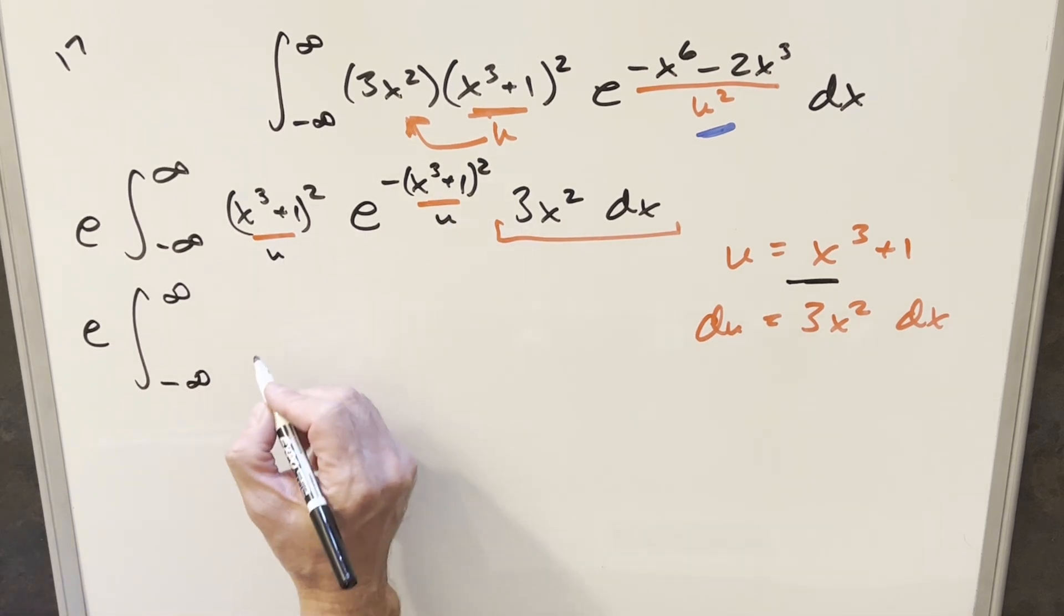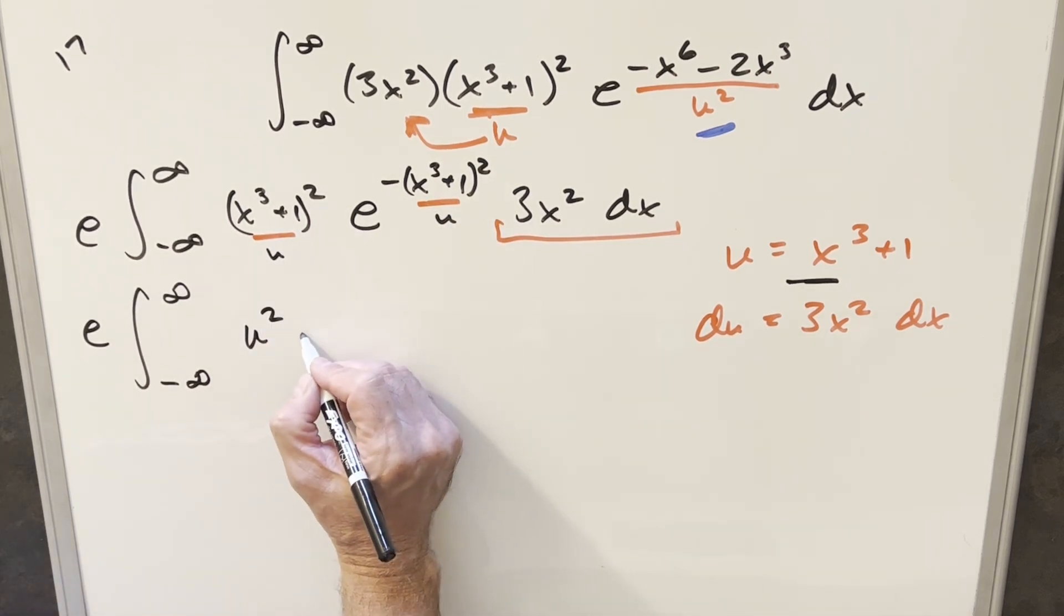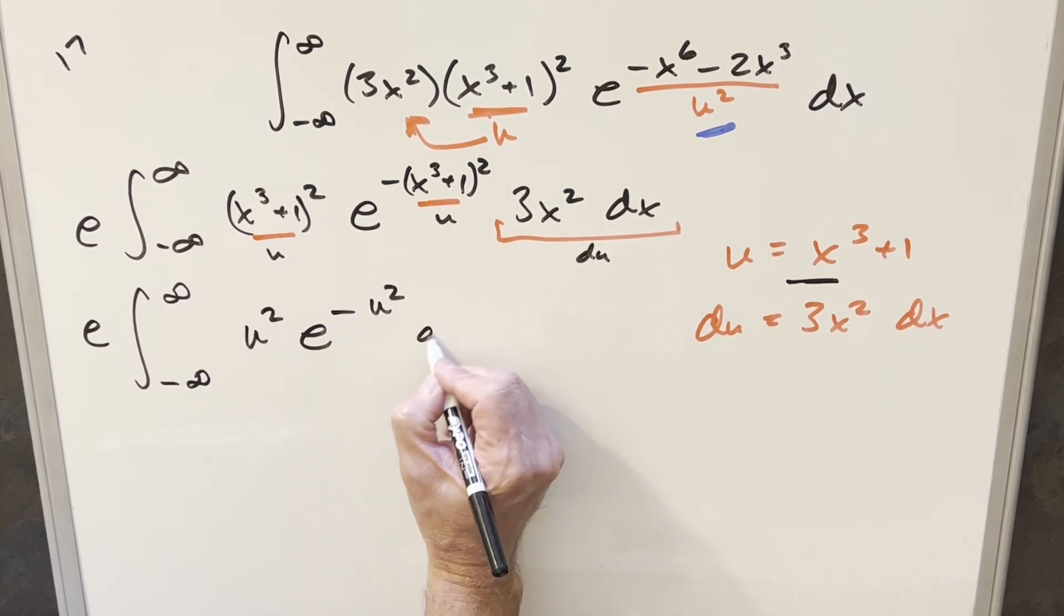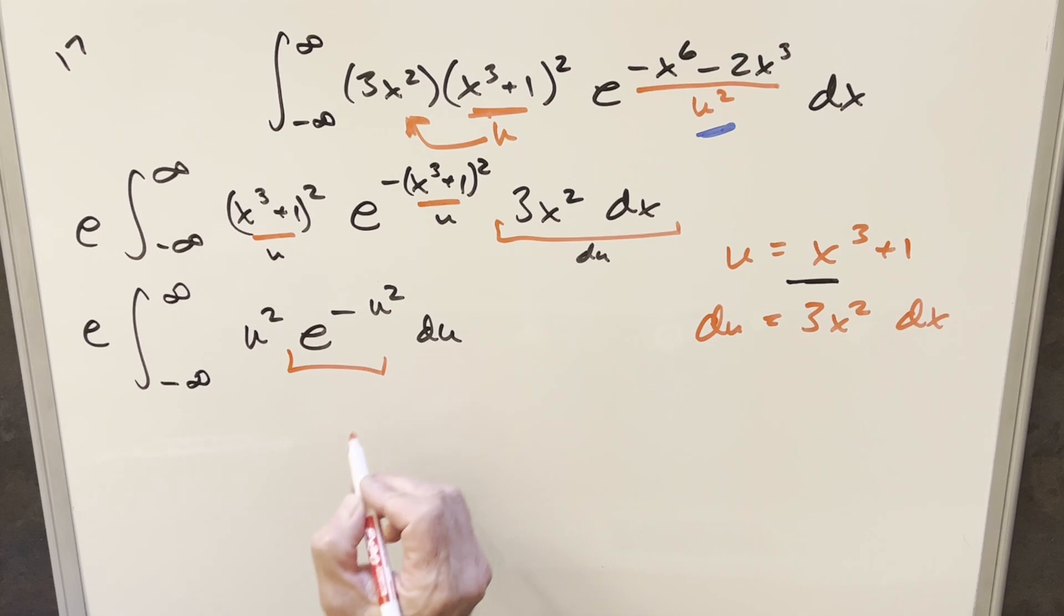Again, this is u. This is u, so we're going to have u squared, e minus u squared, and all this is just du. So now this part looks like the Gaussian integral. This is good, but then we have this u squared hanging around.